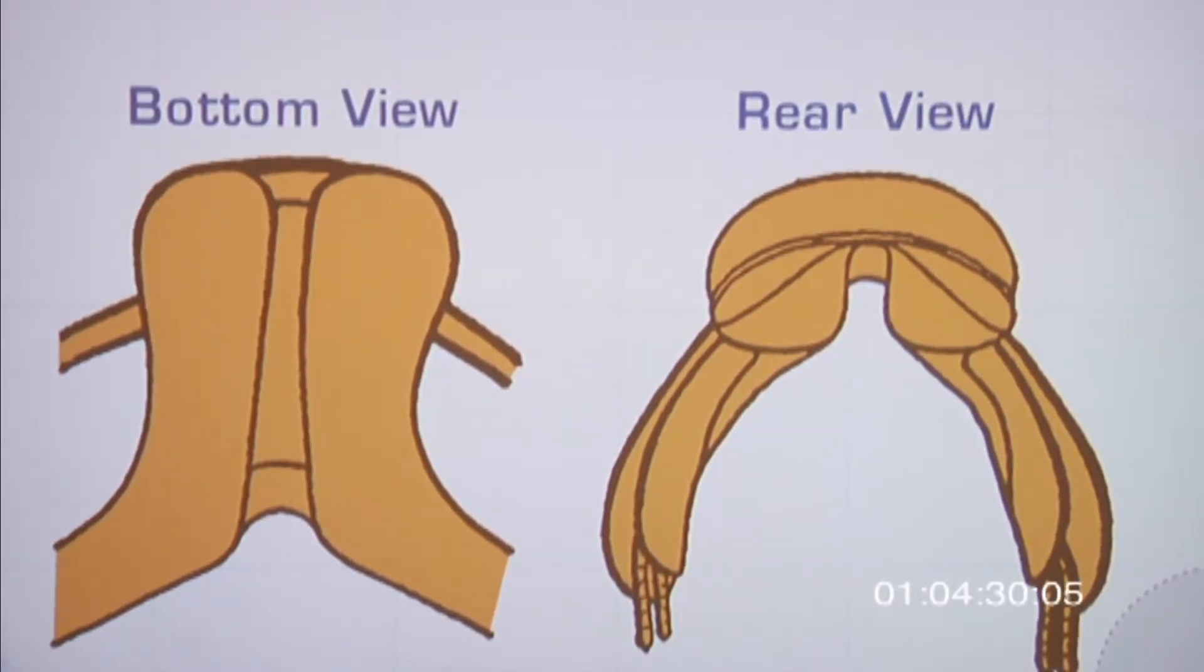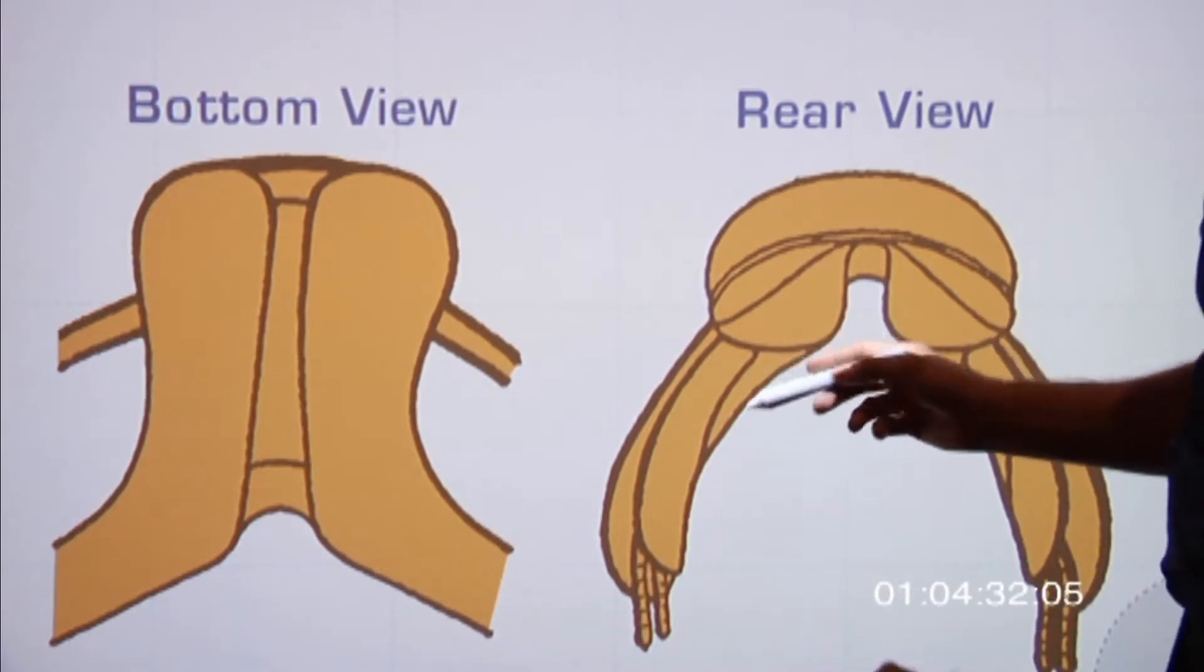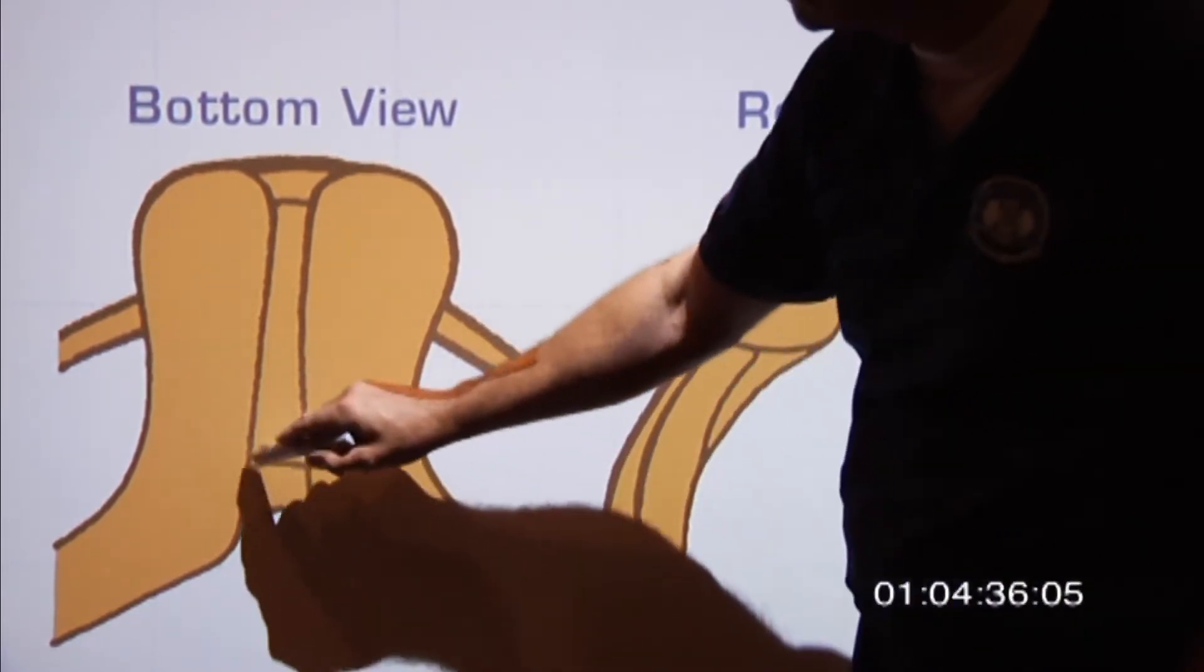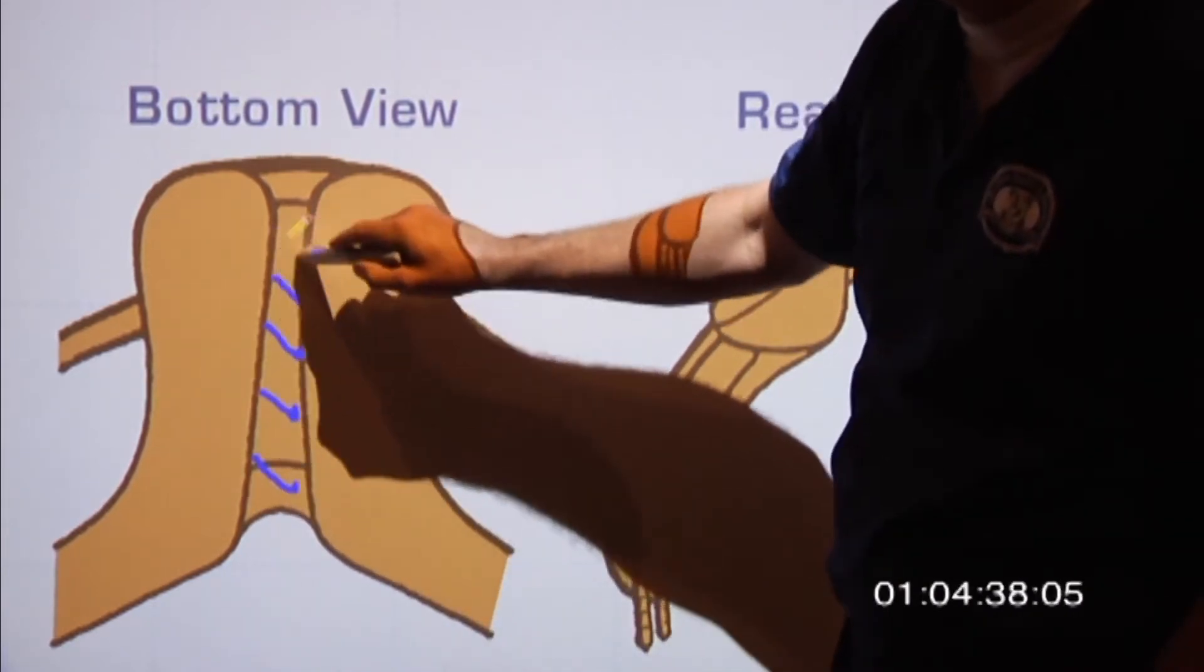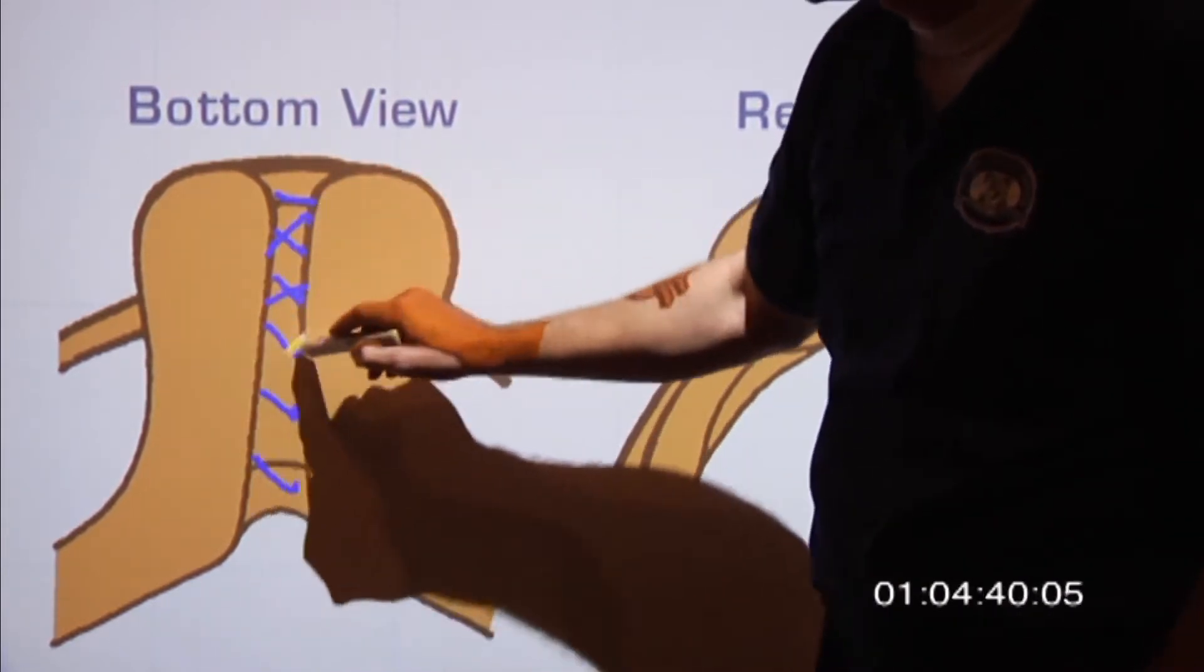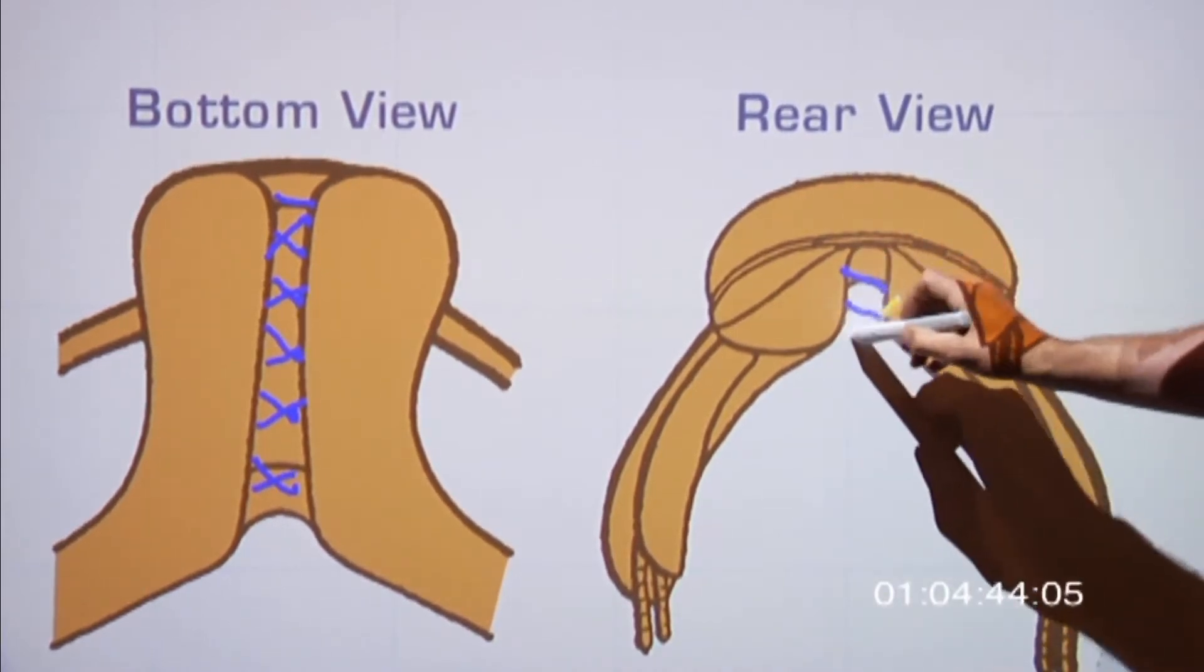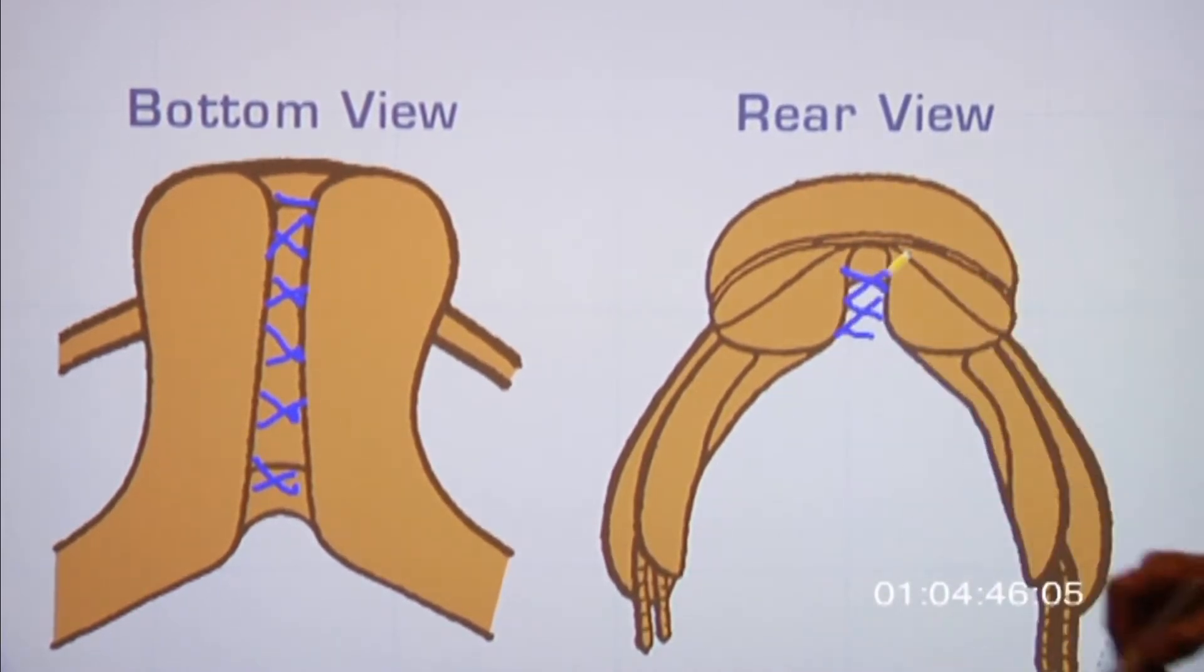Here we're looking at a saddle from the rear and from the bottom. What is the reason we have space right through here? Why do we need saddles with space through here? There's pretty much two main reasons.